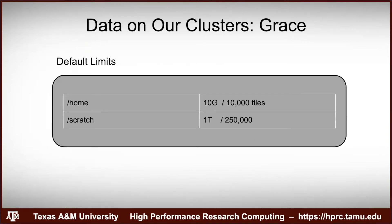The default limits have two components: space (how much the files take up) and number of files. For home directories, the limit is 10 GB or 10,000 files, whichever you hit first. For scratch directories, the limit is 1 TB or 250,000 files, whichever you hit first.